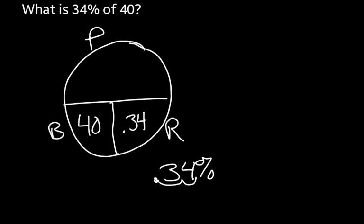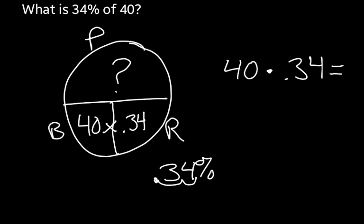When we look at the circle, what we don't have is a portion — and that's what the question is asking: what is that part of 40? Since we have both bottom sections filled out, we're going to multiply those two numbers. So 40 times 0.34 — when you multiply that out, you find that 40 times 0.34 equals 13.6.